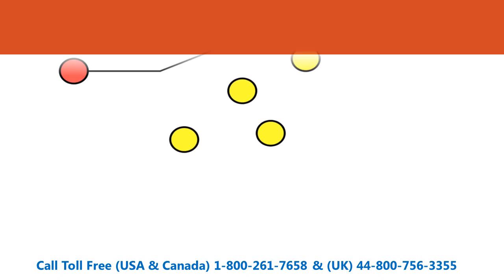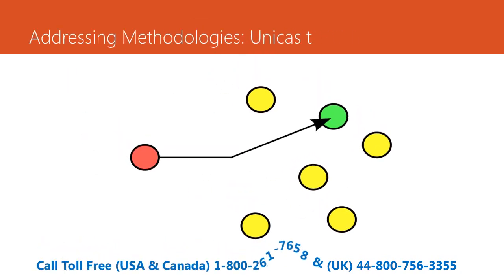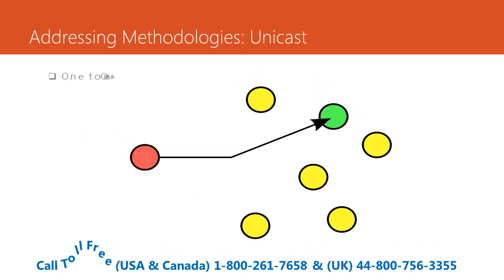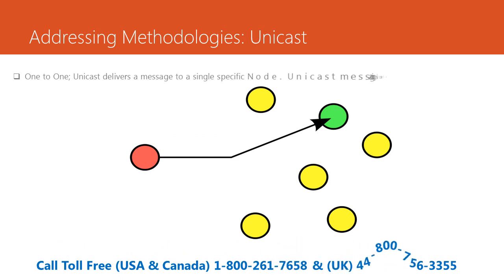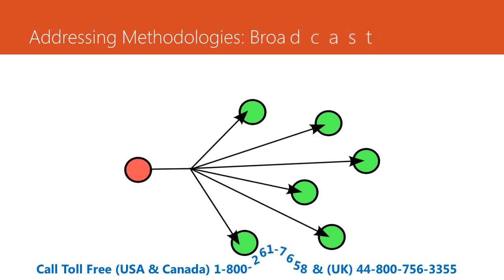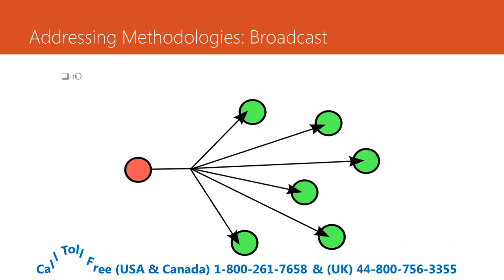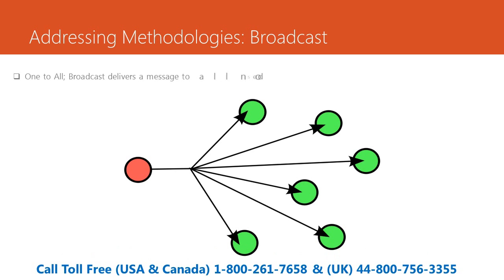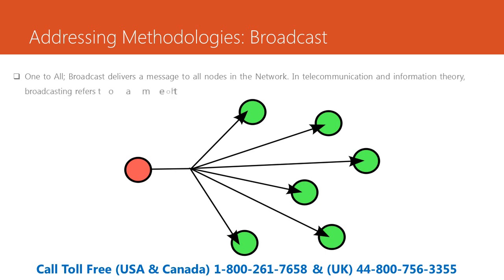The first router addressing methodology is unicast — one to one. The second is broadcast — one to all. Broadcast delivers a message to all nodes in the network. In telecommunication and information theory, broadcasting refers to a method of transferring a message to all recipients simultaneously.